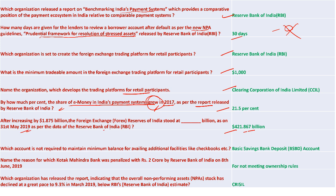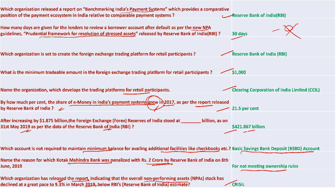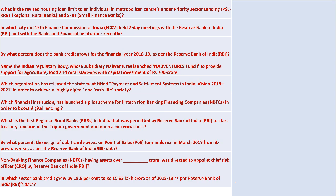Forex reserves were 421.867 billion dollars as on 31st May 2019 as per RBI data. Basic Savings Bank Deposit accounts are not required to maintain minimum balance for additional facilities like a cheque book. Kotak Mahindra Bank was penalized 2 crore by RBI for not meeting promoter shareholding rules. CRISIL released a report indicating that overall NPA stock has declined to 9.3% in March 2019, below RBI's estimate.